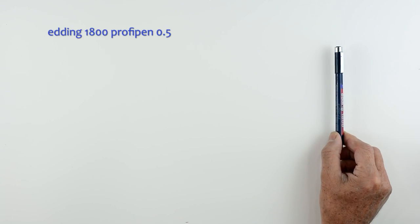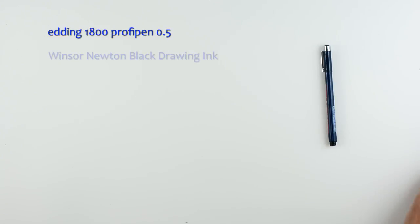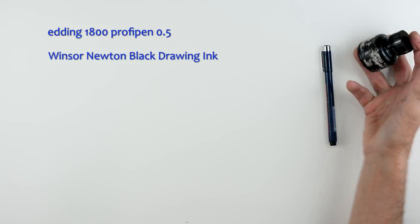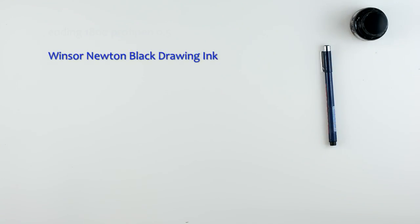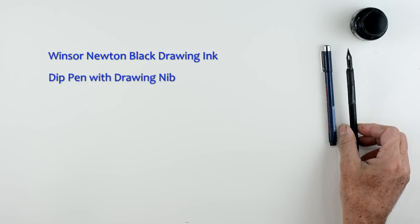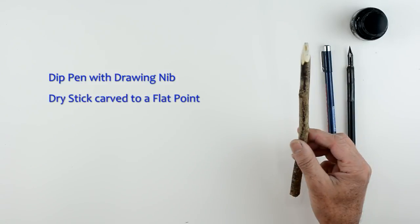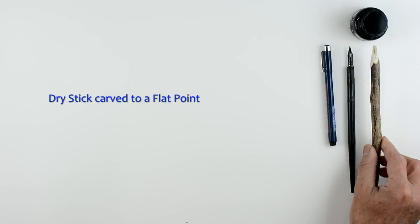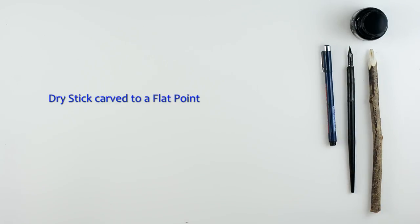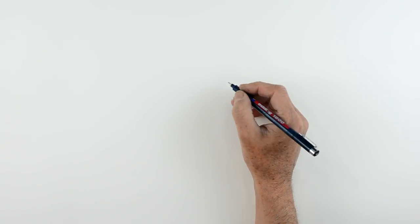I'm going to be using exactly the same materials as in the previous two videos, namely a pen, Windsor Newton drawing ink, a dip pen and drawing nib, and a piece of stick which I've carved to a nice flat point. All three will produce different marks.